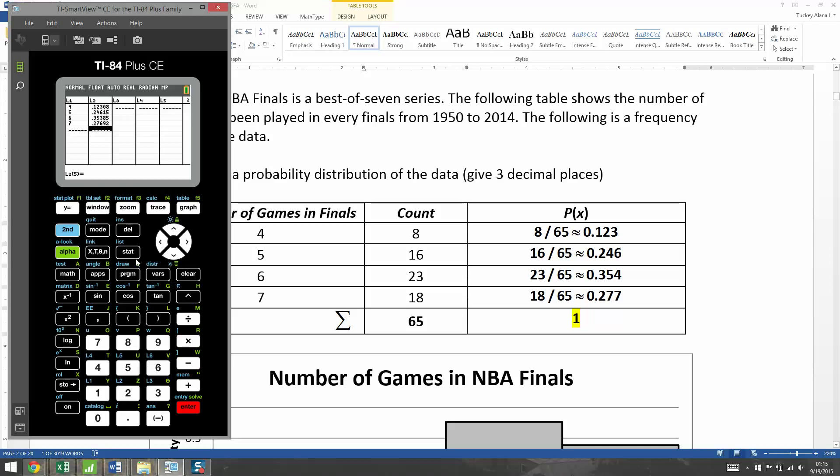Then I run to Stat, Calculate, one variable. L1 is my list and L2, second 2, will be my frequency list. I'll go down to Calculate and press Enter. And there's the mean right there, 5.785 when you round it.